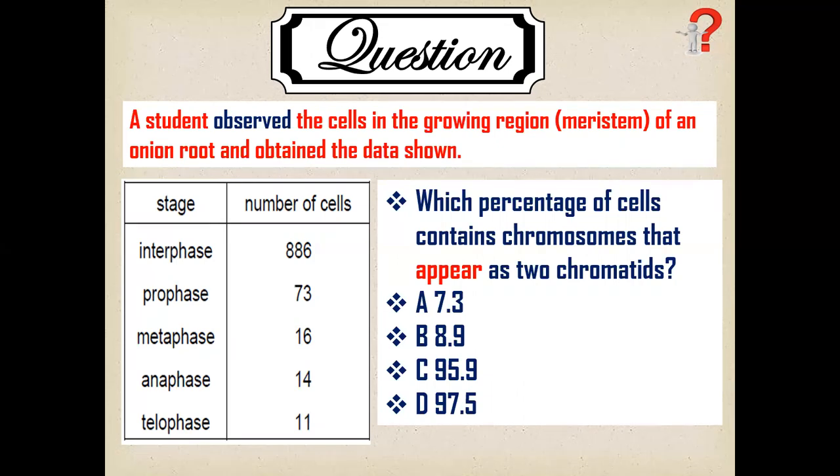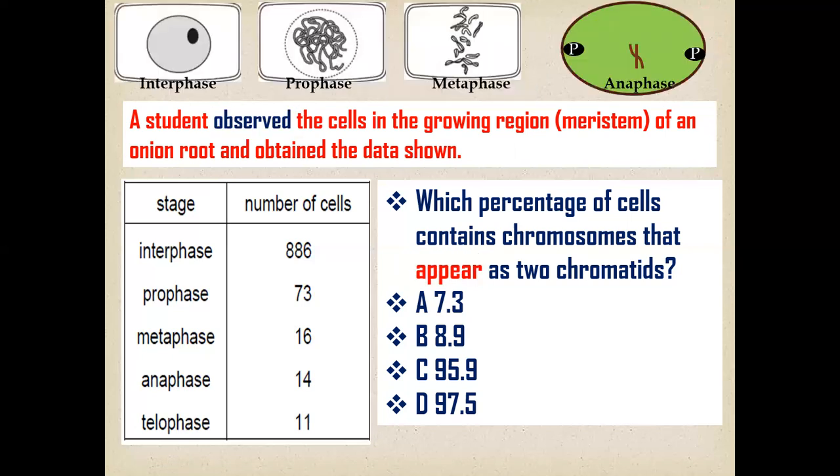The examiner is asking questions about the chromosome stage when they appear in 2-chromatid conditions. These words are important. Chromosomes only appear at the time of M phase when the cell is dividing. During interphase, the chromosome does not appear.